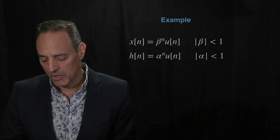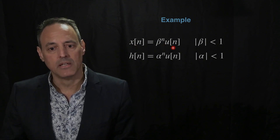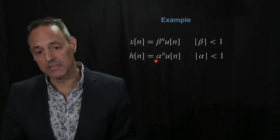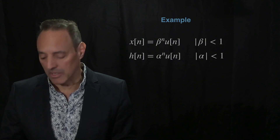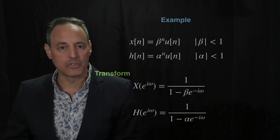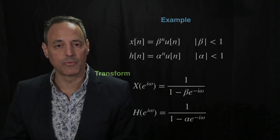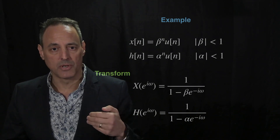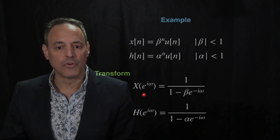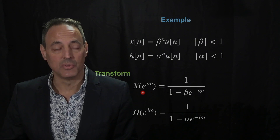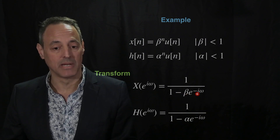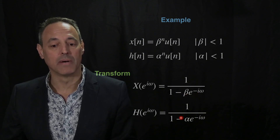Let's work out an example by hand. The input signal is x[n] = β^n u[n], which turns on at n = 0. The impulse response is h[n] = α^n u[n]. We can ask: what is the response of this LTI system? The first step is to find the Fourier transform of both h and x. We've already worked these out before: the transform of x is 1/(1 − β e^{−jω}) and the transform of h is 1/(1 − α e^{−jω}).